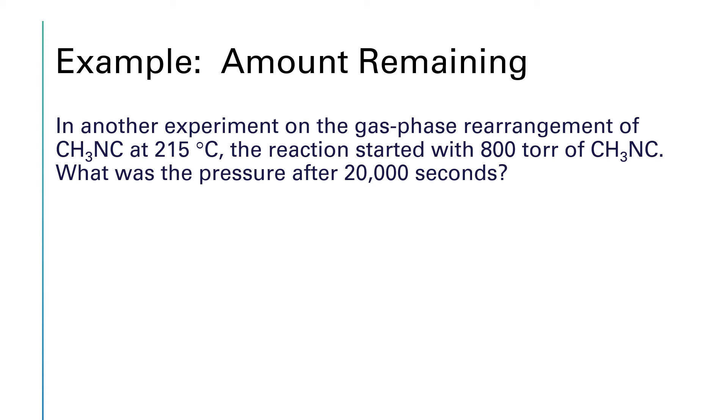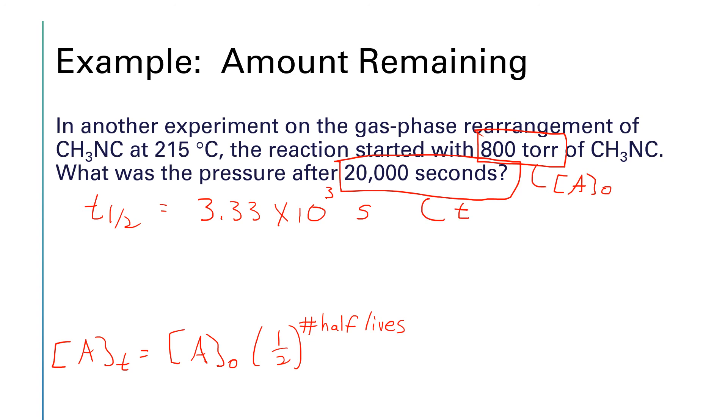All right, we found in the previous calculation that the half-life for this reaction was 3,330 seconds. And so let's use the equation that says the concentration of A at time t is equal to A naught times one half raised to the number of half-lives. So we already know A naught. A naught is 800 Torr. And we know the time. The time is 20,000 seconds. So we just need to figure out what the number of half-lives is.